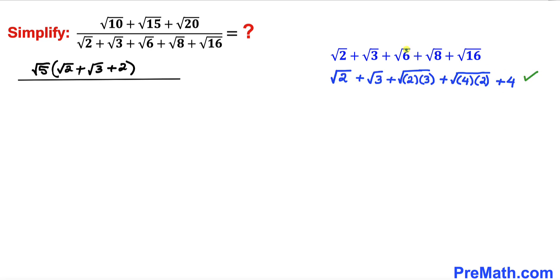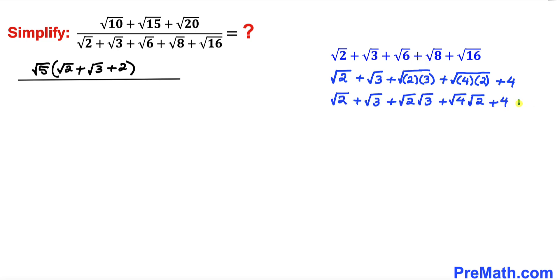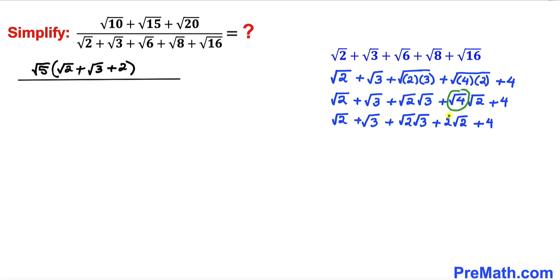I replace √6 with √(2×3), √8 with √(4×2), and √16 with 4. Applying the radical property again, and noting that √4 equals 2, I replace √4 with 2 throughout. The rest of the terms remain the same.